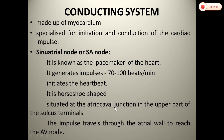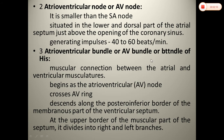The SA Node is the Pacemaker of the Heart. Looking at its location, it is situated in the upper part of the Crista Terminalis, at the Atrio-Ventricular junction. The impulse passes from the AV node from the atrial valve to the arterial valve. The Atrio-Ventricular Node is located at the lower end dorsal part of the atrial septum, just below the opening of the coronary sinus.